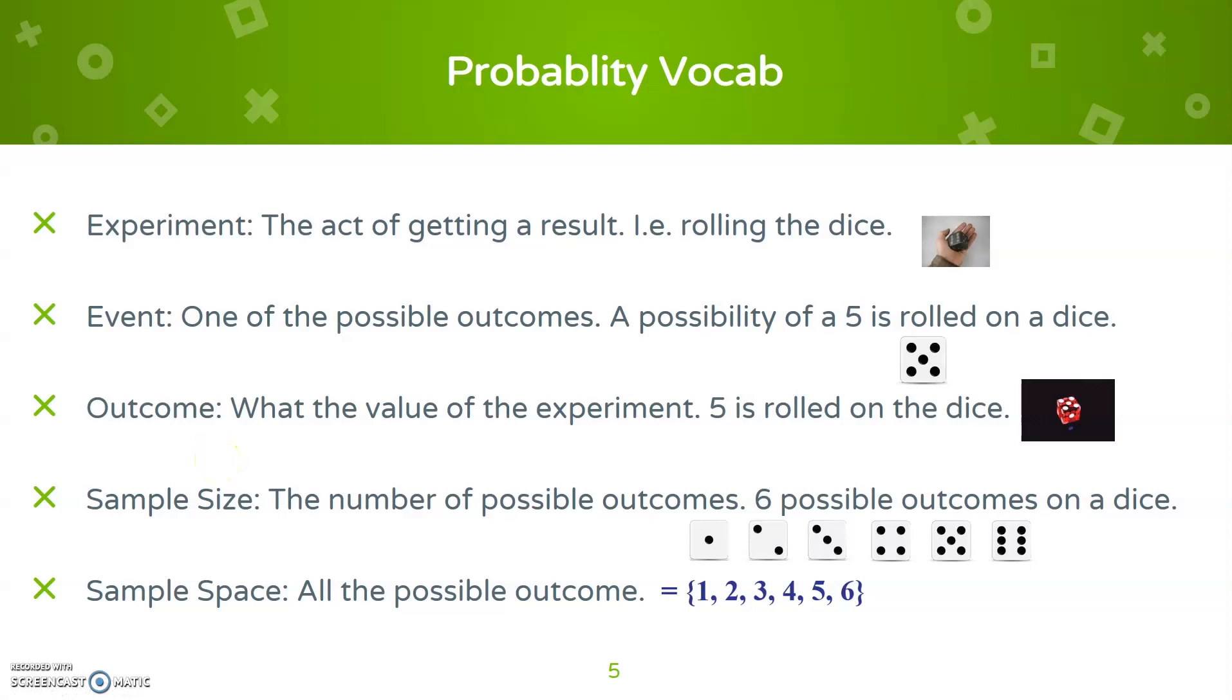Let's go through some vocab words. Experiment: This is the act of getting a result, like rolling the dice or flipping the coin. An event is one of the possible outcomes of that, like a five on a dice. The outcome is what is the actual value, the five on a dice.